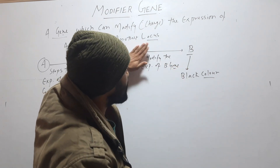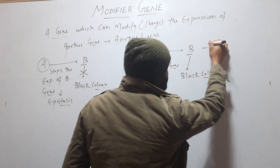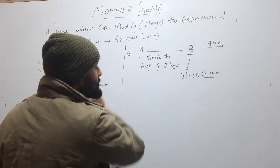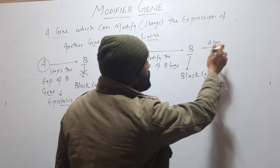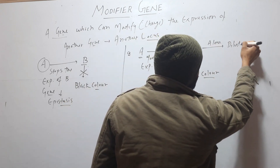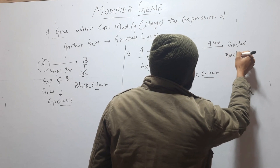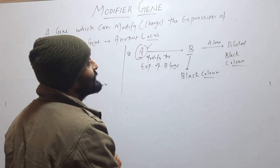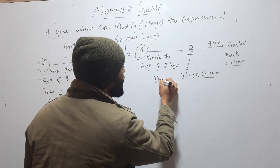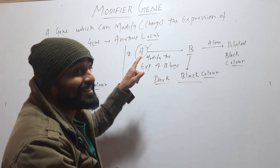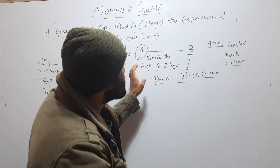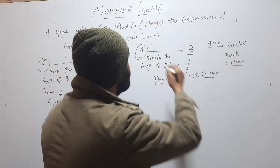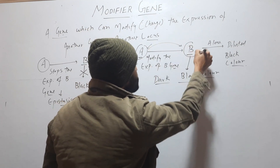In the absence of this A gene — when it is in recessive form, small a — the B gene alone will produce diluted black color. But if the A gene is present, it will produce dark black color. So what this A gene did is simply enhance the intensity of color. This gene modifies the expression of the B gene, and this type of gene is called a modifier gene.